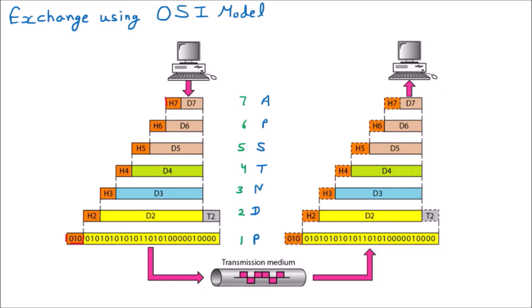This diagram shows two systems - system A is my system and system B is your system. I am user one sitting on my system, sending data to you, who is user two.